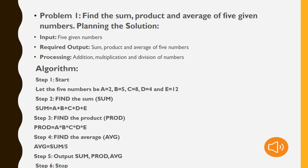Now we need to output these and show the results on screen — what the result is for sum, for product, and for average. We took three variables: sum, product, and average; after calculation, whatever the result is will be stored in those variables, and we output them on screen.